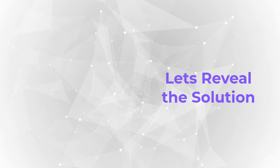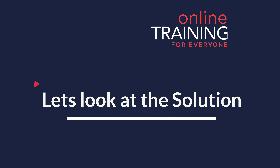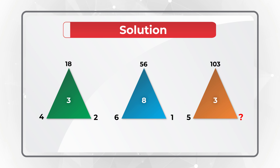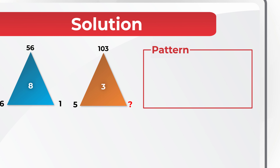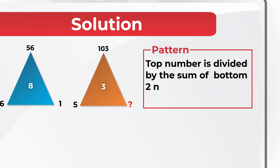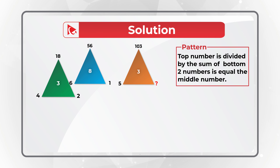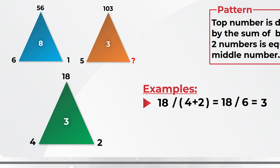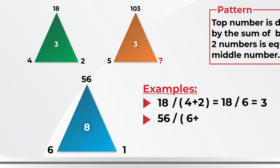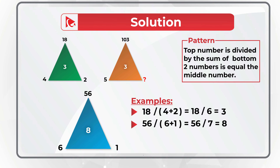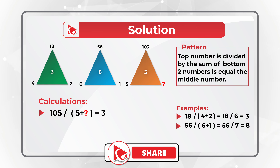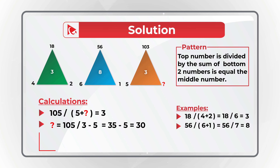Always look for patterns. The pattern is that the top number divided by the sum of the bottom two outside numbers equals the middle number. For example: 18 ÷ (4 + 2) = 18 ÷ 6 = 3. In the second triangle: 56 ÷ (6 + 1) = 56 ÷ 7 = 8. For the third triangle: 105 ÷ (5 + missing number) = 3, so we divide 105 by 3 and subtract 5: 35 − 5 = 30. The answer is Choice D: 30.